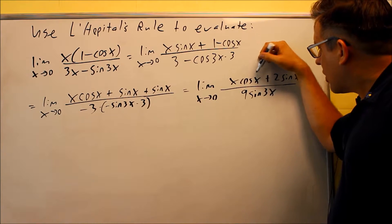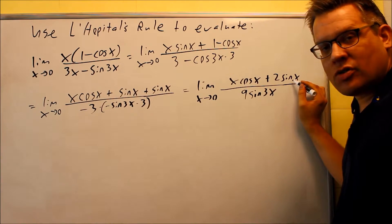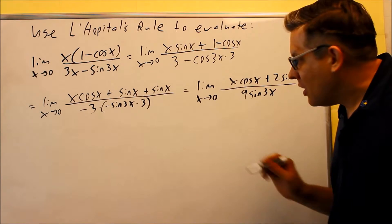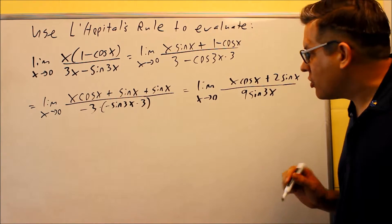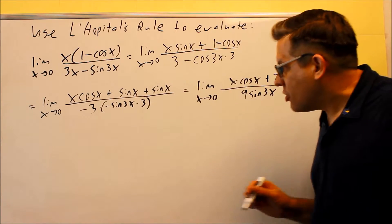We've got to check it again by putting 0 on top and bottom. If I put 0 in, this first part is going to be 0. Sine of 0 is 0, so we still get a 0 on top. Down below, sine of 0 is 0, so once again, we get another 0 over 0 situation. We've got to apply L'Hôpital's another time.